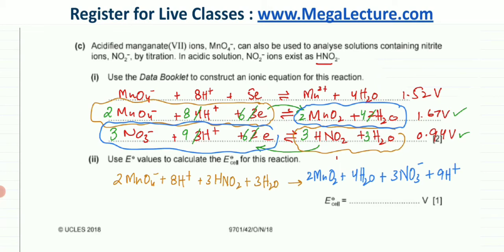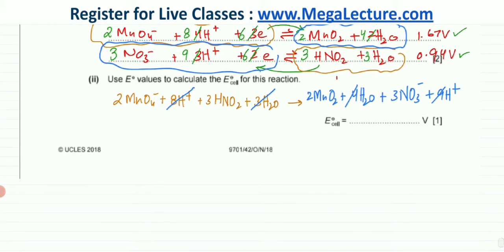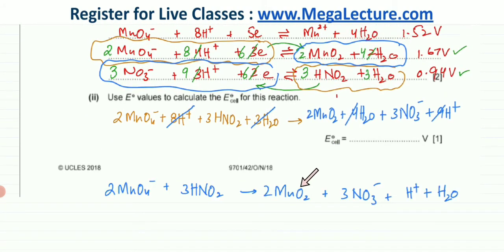That's my overall reaction, which can be simplified. The 8H⁺ and the 9H⁺ can get cancelled out — there's only going to be 1H⁺ left on the right side. The 3 water molecules and the 4 water molecules can get cancelled out as well. So finally this is my overall equation for this reaction.